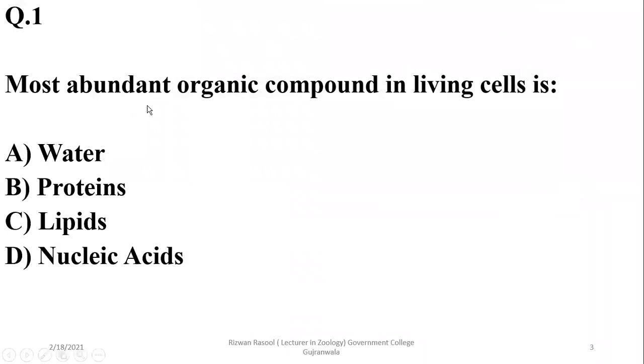So most abundant organic compound in living cells is - most abundant compound in living cells is water, but if we look at the organic compound, the most abundant are the proteins. So right option in this question is B. Proteins are the most abundant organic compounds in living cells.